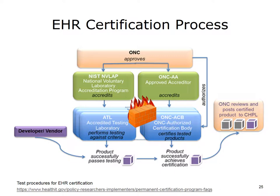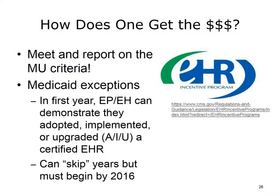How does an organization get the Meaningful Use money? It has to meet and report on the Meaningful Use criteria. There is one exception under Medicaid: in the first year of Medicaid funding, an eligible professional or eligible hospital can demonstrate that they adopted, implemented, or upgraded a certified EHR, so they don't necessarily need to meet all the Meaningful Use criteria. As long as they've adopted, implemented, or upgraded to a certified system in that first year, they will get the incentive dollars. Medicaid also allows for opting out of or skipping years, but the adopting, implementing, or upgrading process must start by 2016.